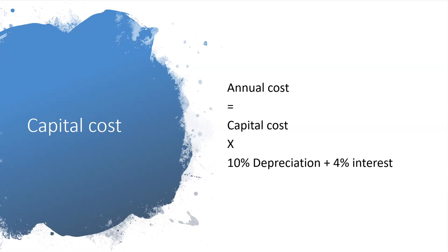For the cost of ownership, we take the capital cost and multiply that by the depreciation plus the interest. For example, if something costs $100,000 to buy, that would be $14,000 per year for ownership cost, which you then average over the area of the farm. That 10% depreciation is a typical figure used for ag machinery by ag consultants - we don't know if that's exact for harvest weed seed control tools but it should be pretty close. I'd like to think these things are going to last 10 years or more.